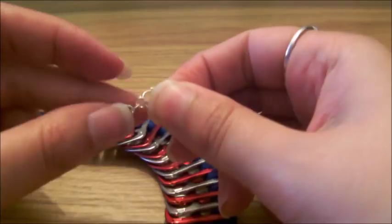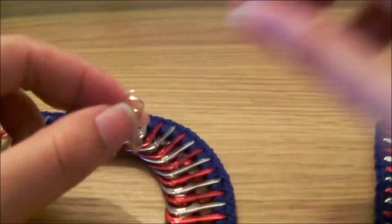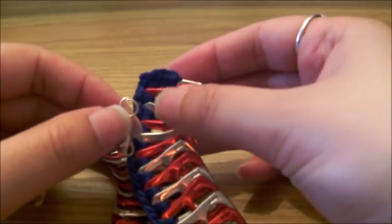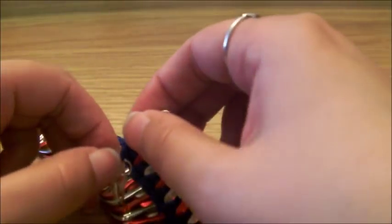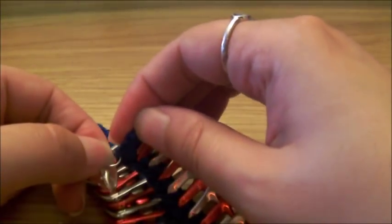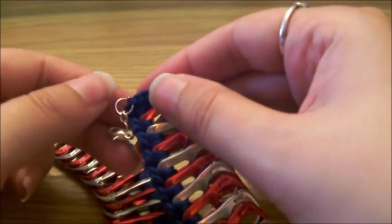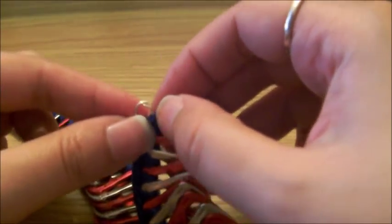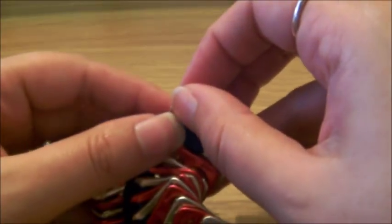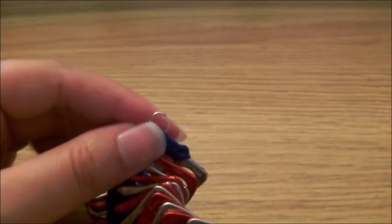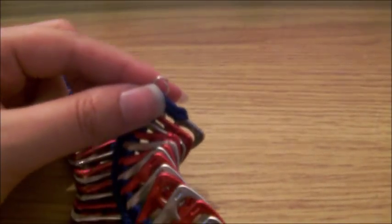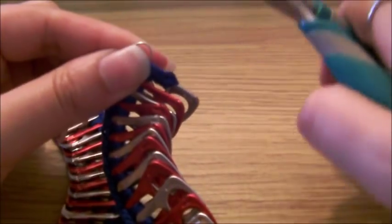So you're just going to get a jump ring attached to the clasp to one corner of the necklace. Now I like to put it through the thread, like through the stitches of it, because it holds nicely. But you can actually put the jump ring through that hole of the pop tab. It will be a bit more sturdy, but it doesn't sit quite as nice. So just close that jump ring up.